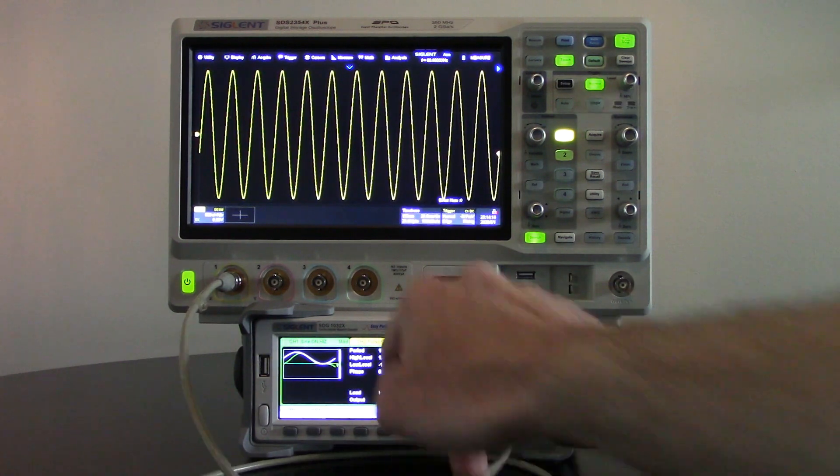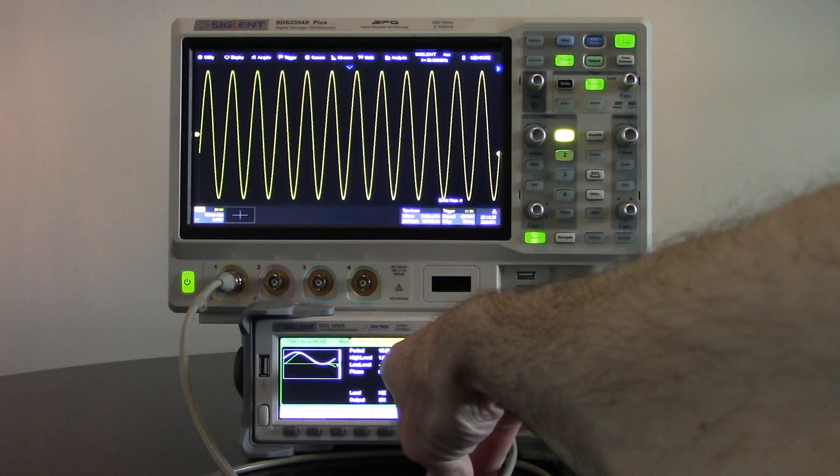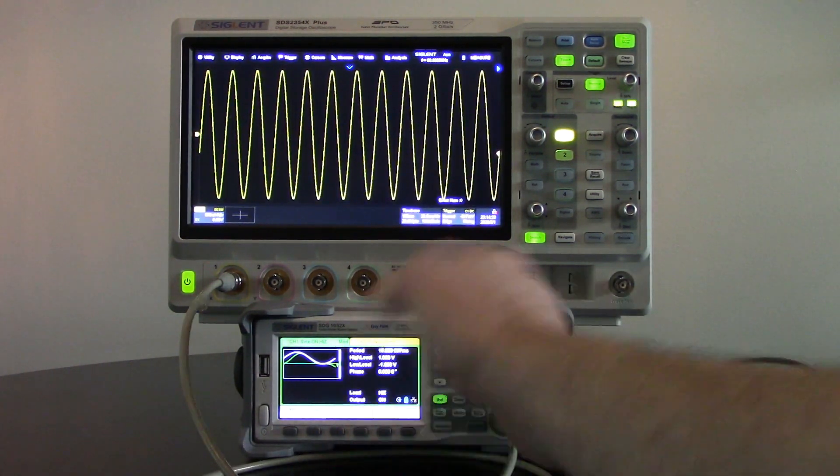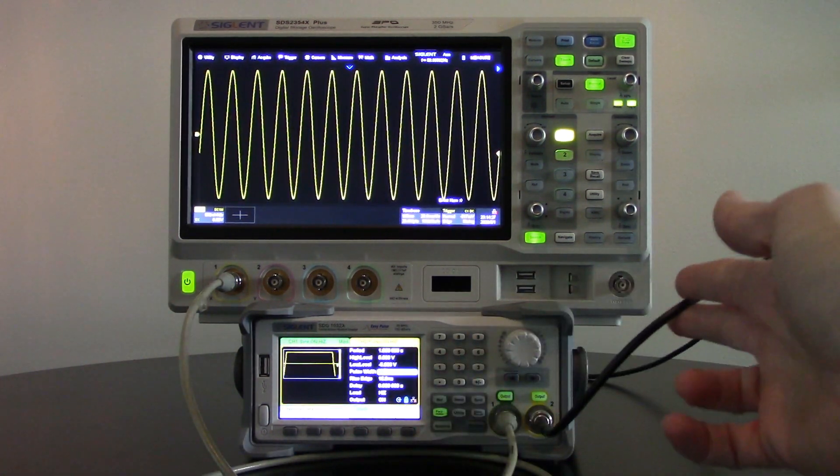Channel 1 is going to be putting out an amplitude modulated sine wave. So the high and low levels are set here, but I'm at 16.67 milliseconds, so 60 Hertz on that sine wave. And then I'm modulating it using channel 2.